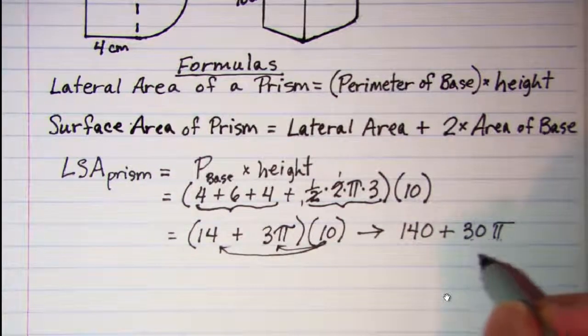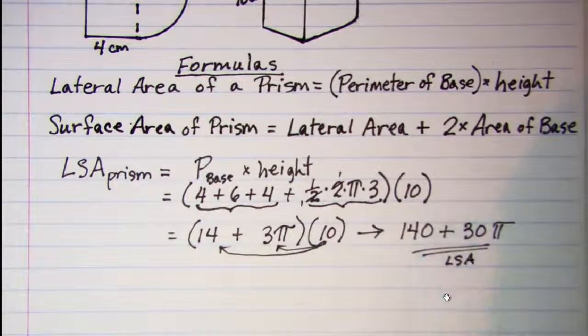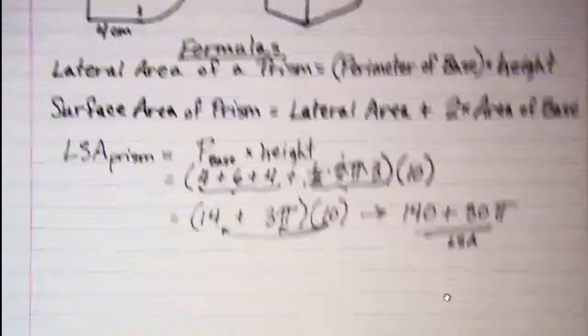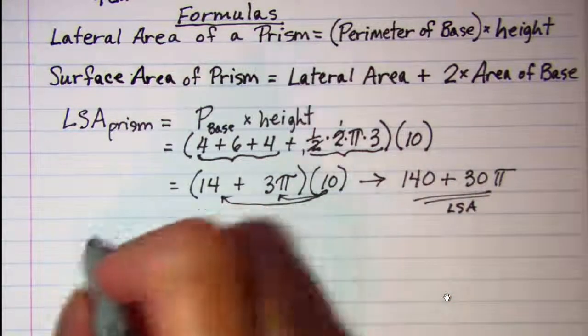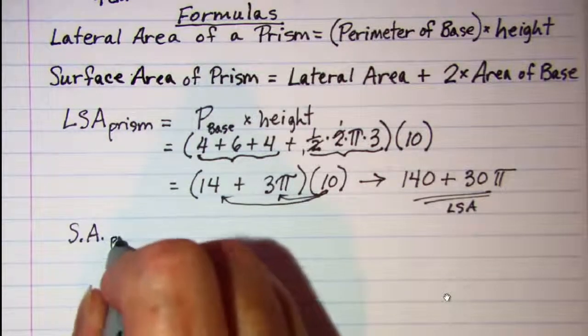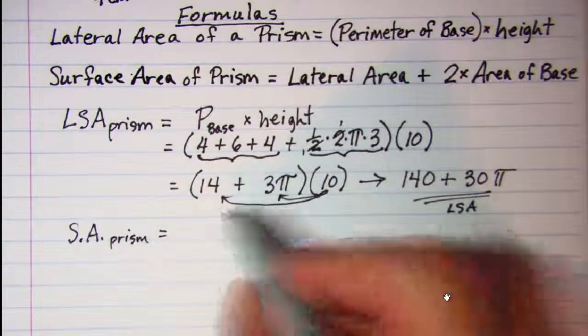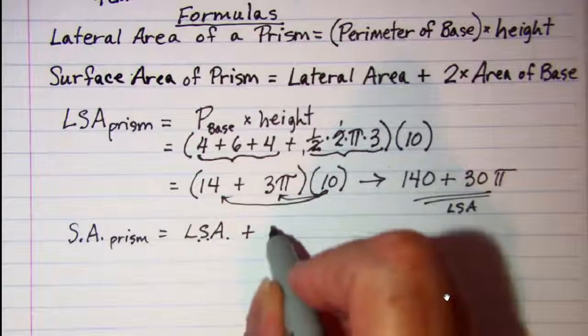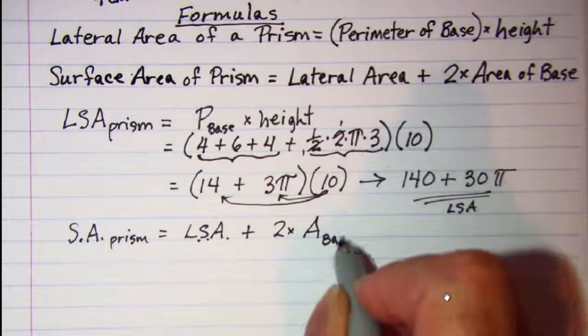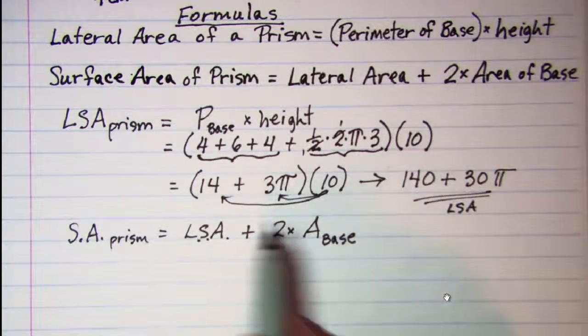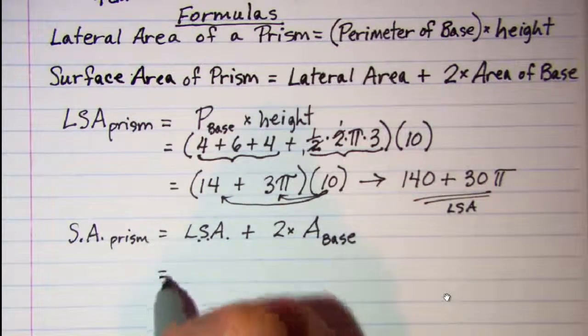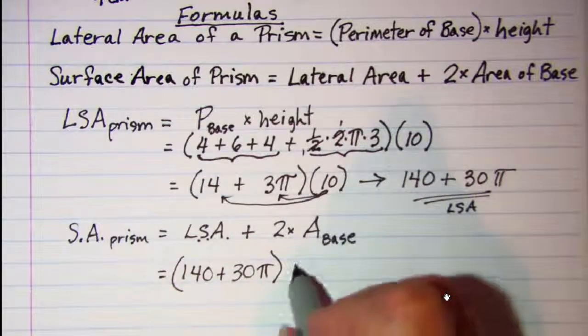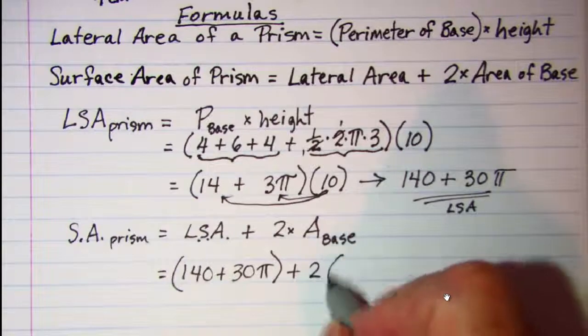Now this is the lateral surface area so I am going to use that for my surface area formula. So surface area of the prism is equal to the lateral area or the lateral surface area plus 2 times the area of the base. So the lateral surface area I already know is 140 + 30π and then I need to add to that 2 times the area of the base.